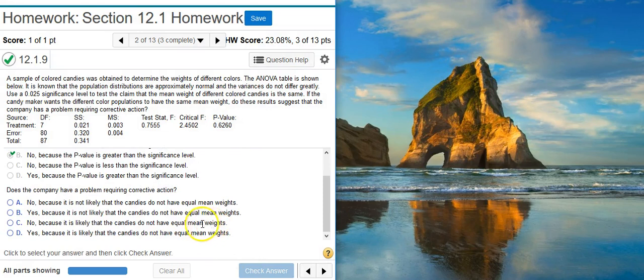Now the second part of this problem asks: Does the company have a problem requiring corrective action? Well, here in the problem statement it says the candy maker wants the different color populations to have the same mean weight.